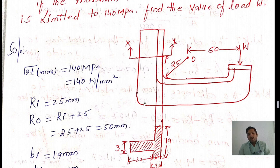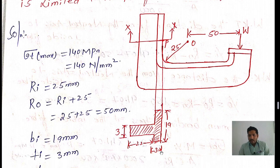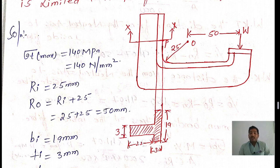Our intention is to find out the outer radius of the C-clamp. The first thickness is 3 mm, and the height from there is 22 mm, so 22 plus 3 gives 25 mm total. So inner radius is 25 plus height 25, giving an outer radius of 50 mm.